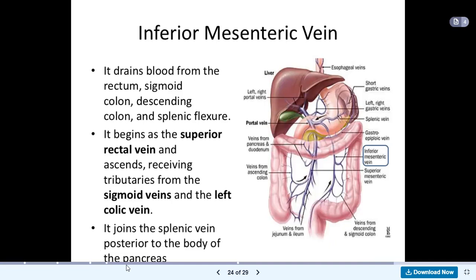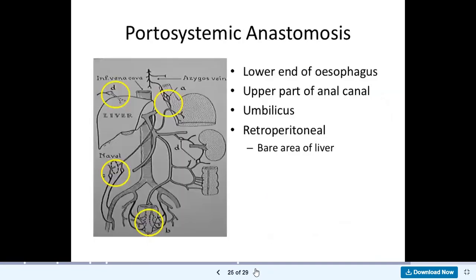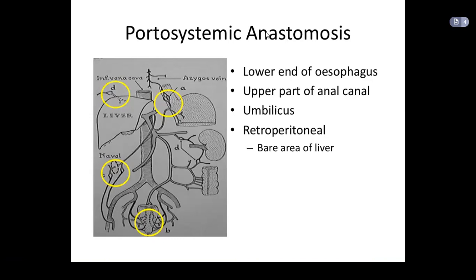The inferior mesenteric vein joins the splenic vein posterior to the body of the pancreas. That is the venous drainage of the digestive system. Now we are supposed to look at the portal-systemic anastomosis, but I would like to do this in a separate lecture. The portal-systemic anastomosis is a connection or anastomosis between the portal venous system and the systemic veins, which we will cover in the next lecture.